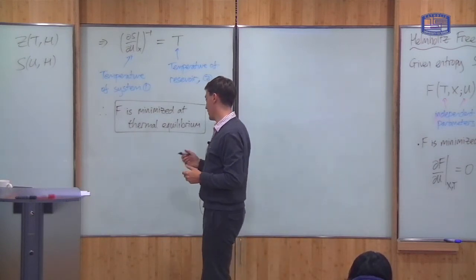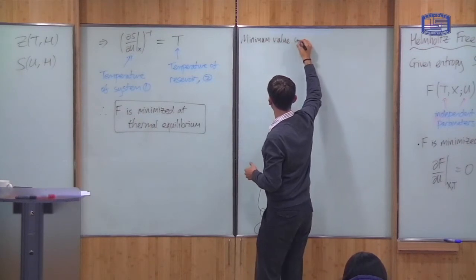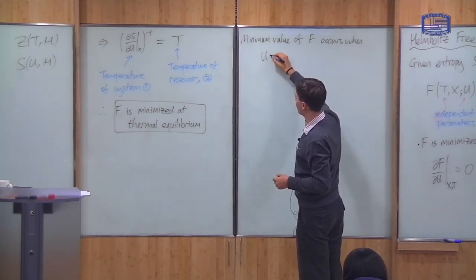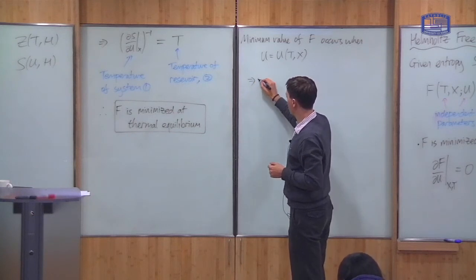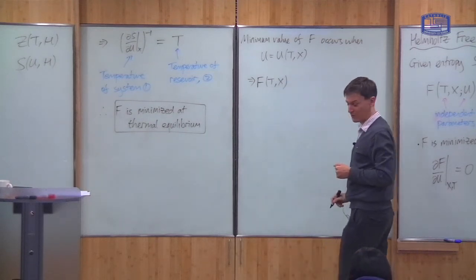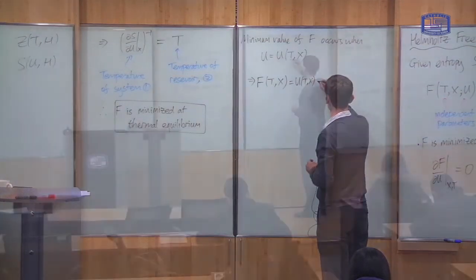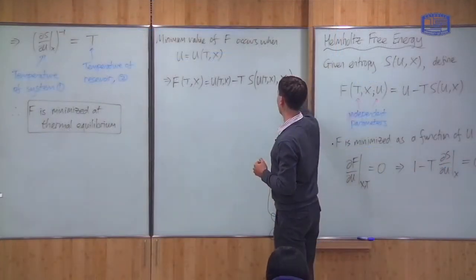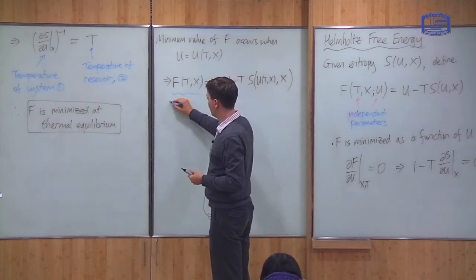It reaches its minimum when the system is in thermal equilibrium with a reservoir at temperature T. We can find what this minimum value of F is. The minimum value of F occurs when U is equal to the thermal equilibrium value U(T, X), which we found before. This is equal to U(T, X) minus T times the entropy S(U(T,X), X).